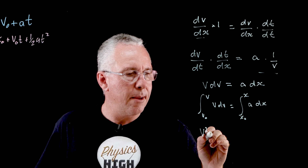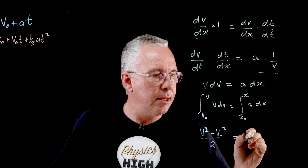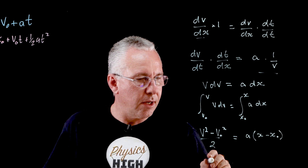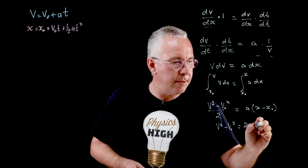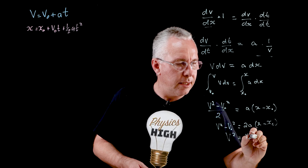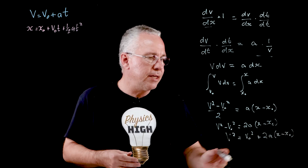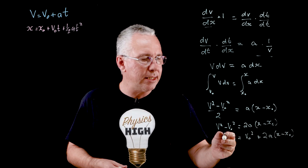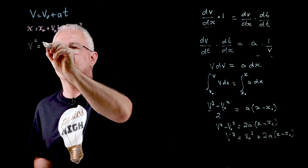Evaluating the integrals gives (v² − v₀²)/2 = a(x − x₀). Multiplying through by 2 gives v² − v₀² = 2a(x − x₀), and therefore v² = v₀² + 2a(x − x₀). Again, often x₀ is zero so this simplifies to v² = v₀² + 2ax. That is our third and final equation of motion.